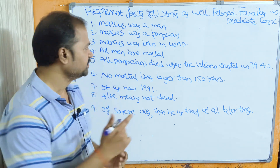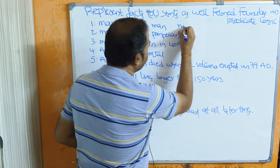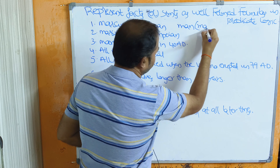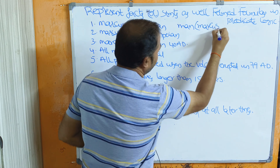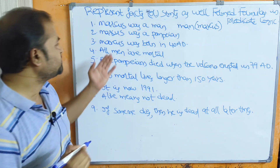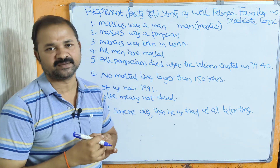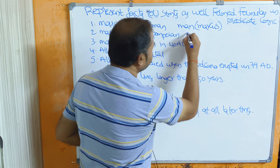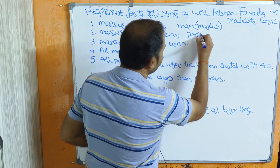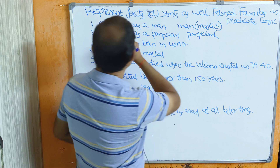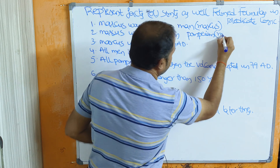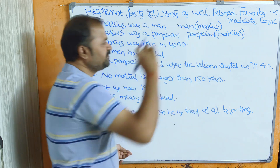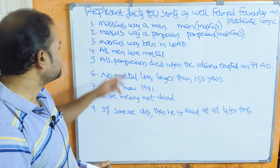The first statement is 'Marcus was a man.' Here the predicate is 'man', and the object is Marcus, so we write man(Marcus). The next one is 'Marcus was a Pompeian.' Here the predicate is 'Pompeian', and the object is Marcus, so we write Pompeian(Marcus). If the sentence contains 'was' or 'is', we represent it like this.